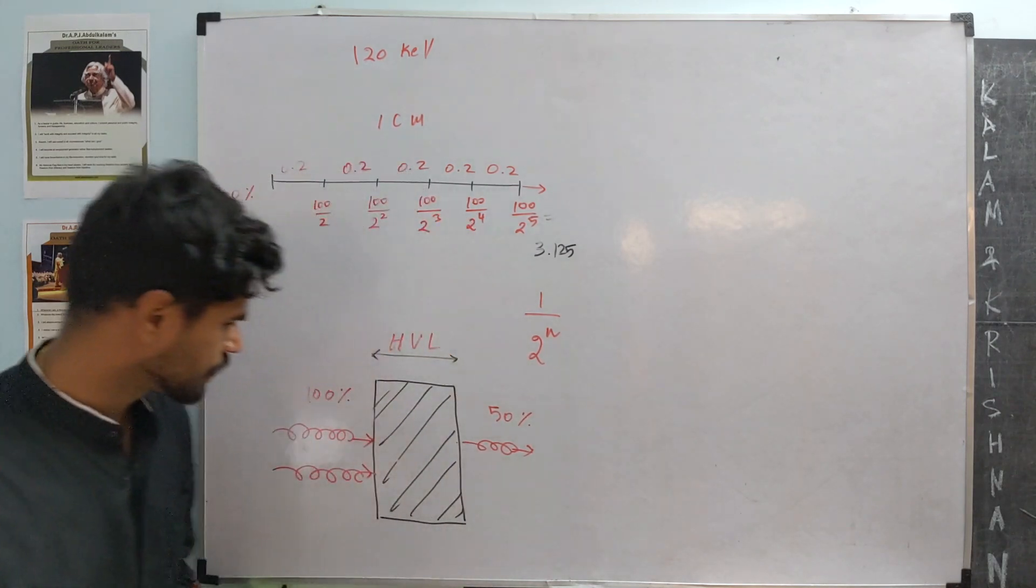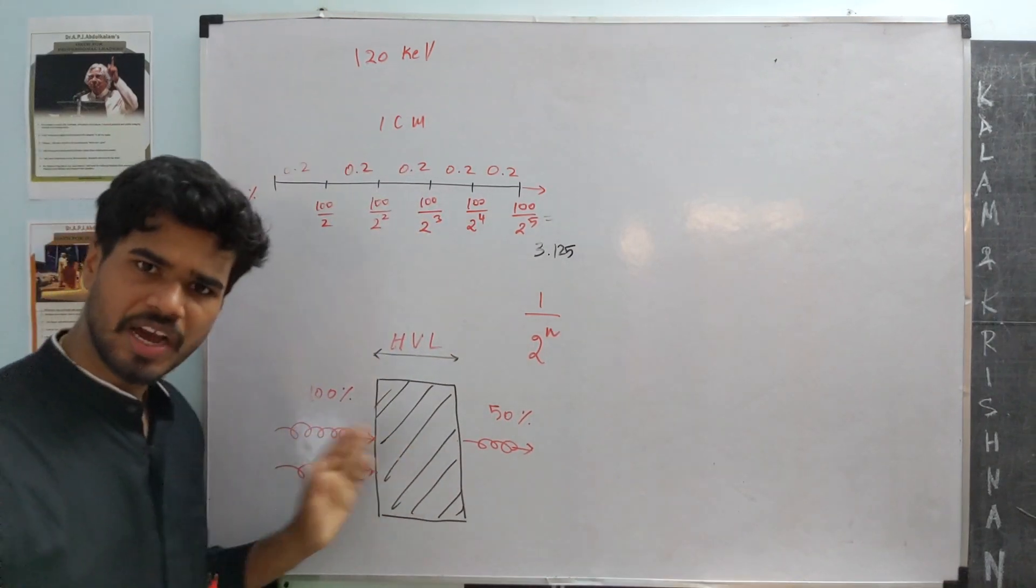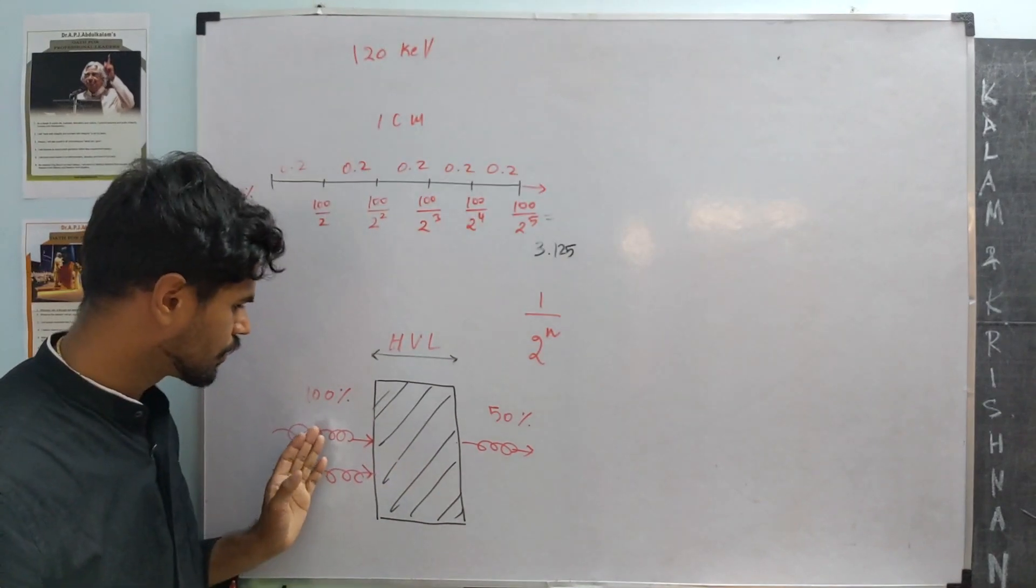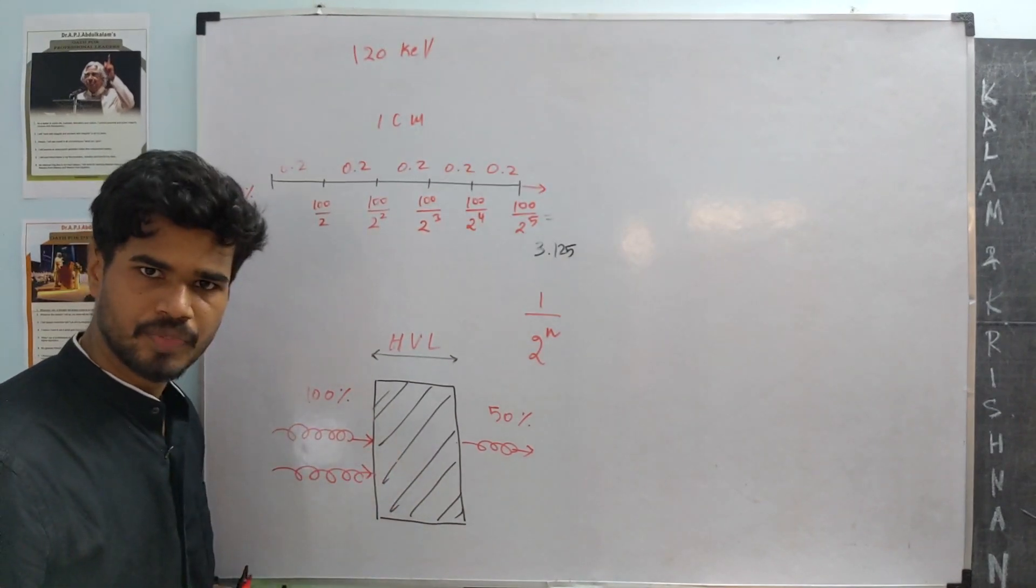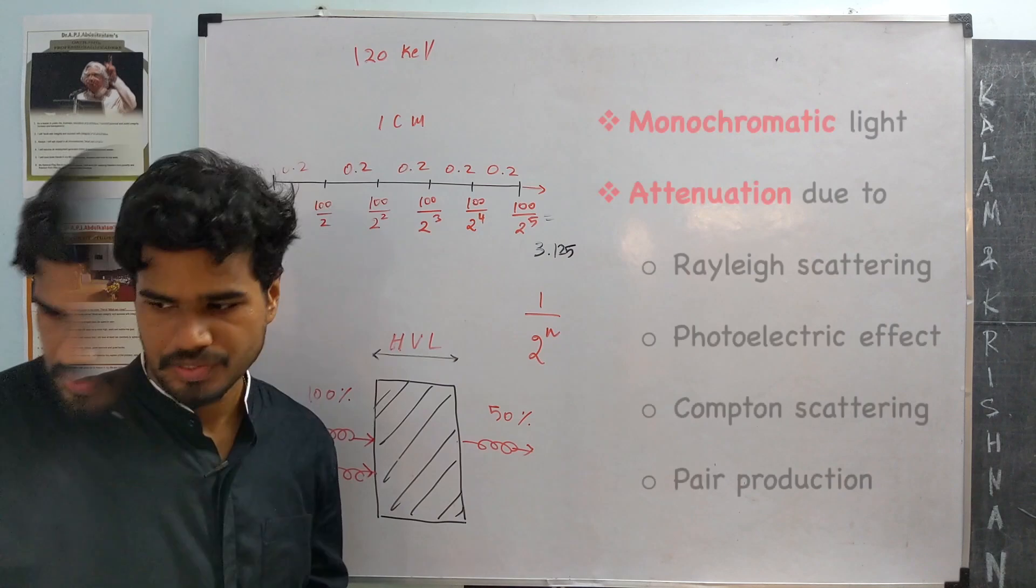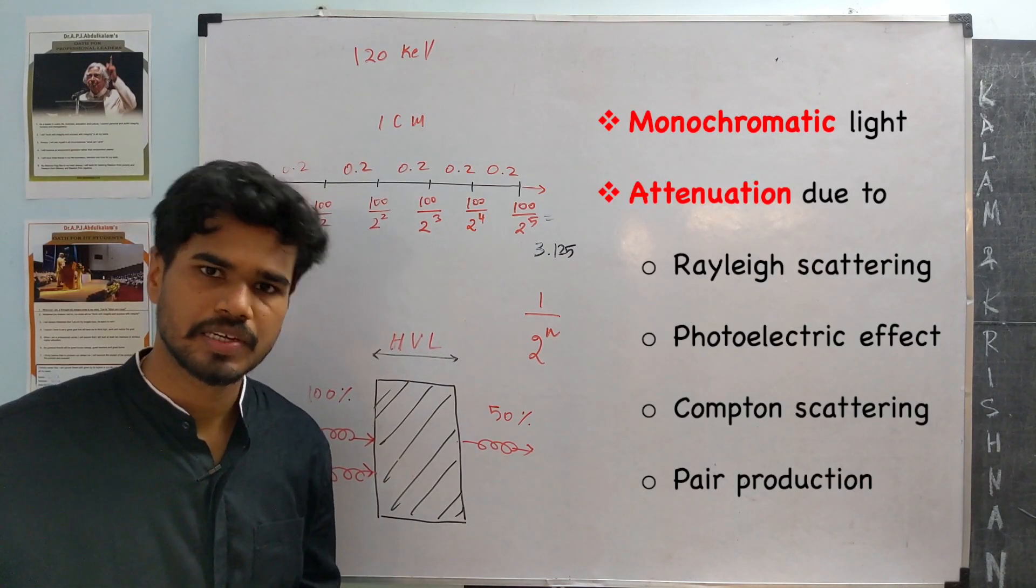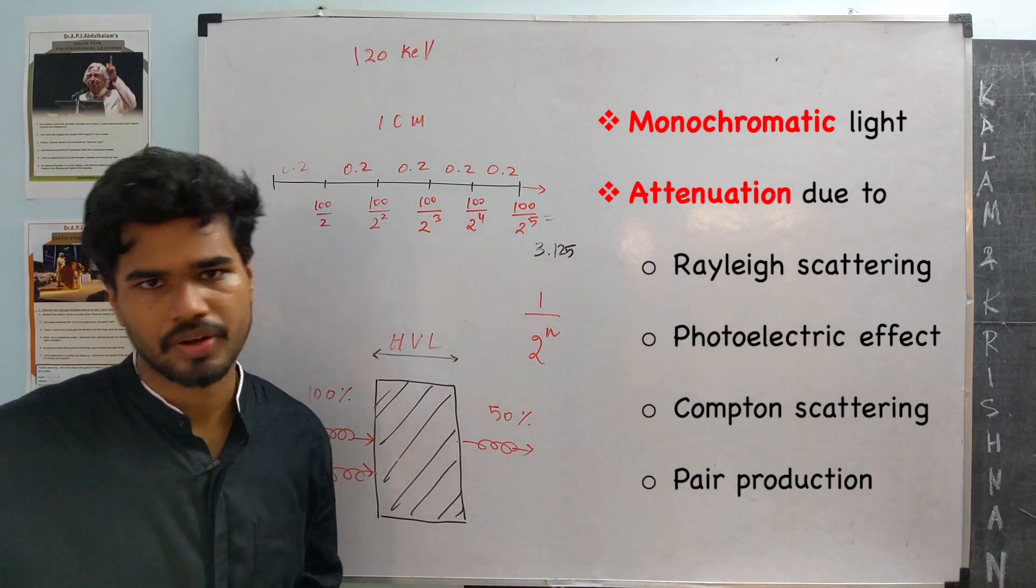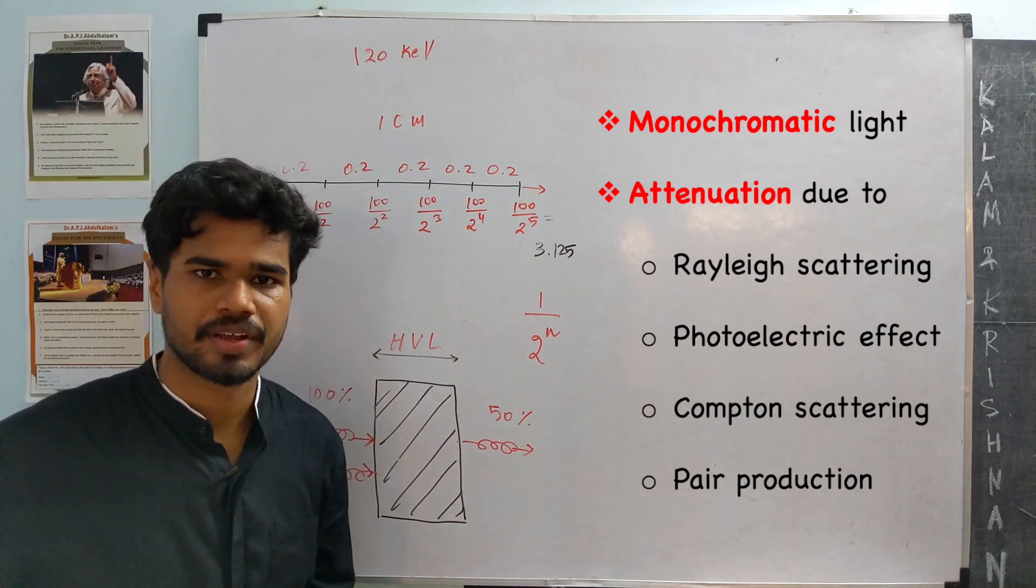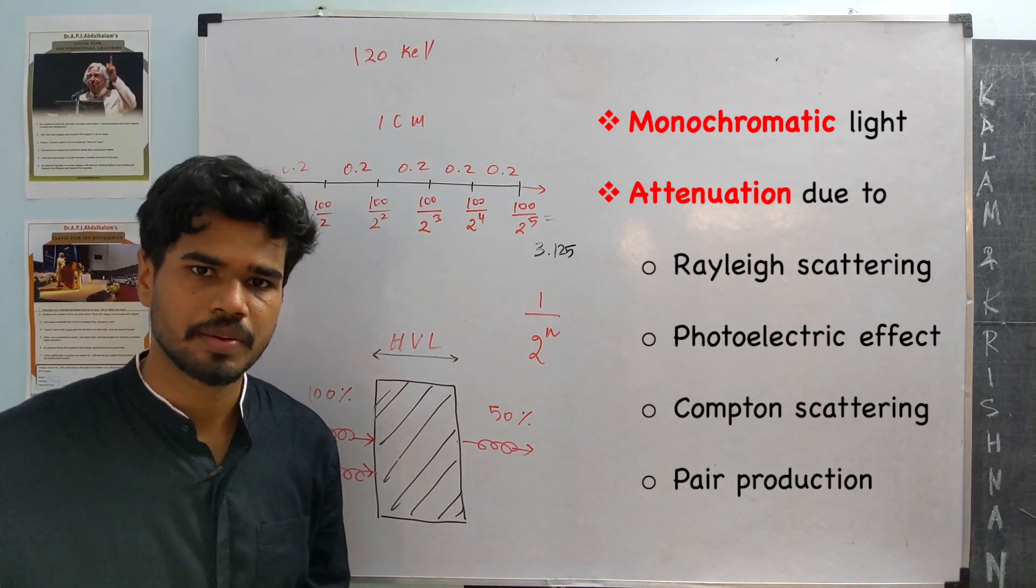First of all, why is there attenuation happening as photon passes through matter? There are four reasons. First is, there is Rayleigh scattering. Second is, there is photoelectric effect. Third is, there is Compton scattering. And fourth, there is pair production.